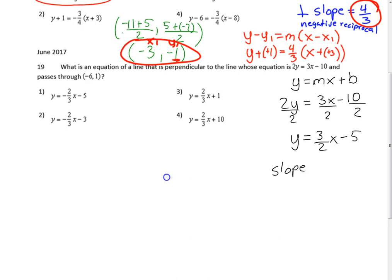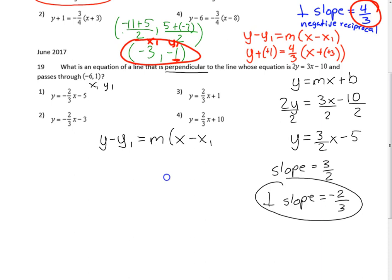The slope is 3/2. We want perpendicular, so we need the negative reciprocal: -2/3. We know it goes through (-6, 1), which is our (x1, y1). Using point-slope formula: y - 1 = (-2/3)(x - (-6)), or y - 1 = (-2/3)(x + 6).